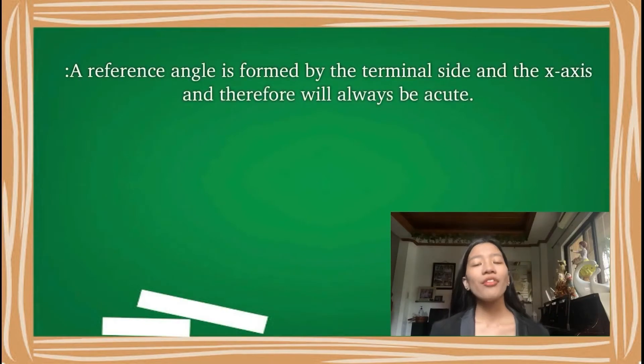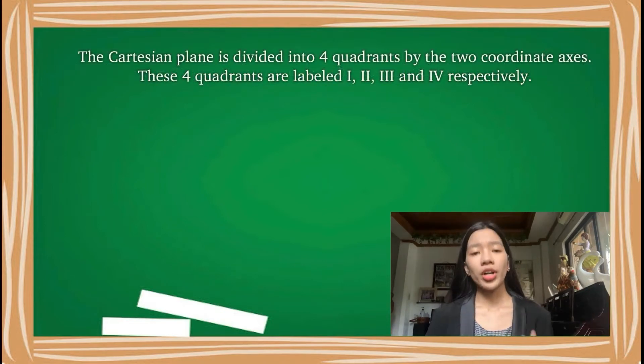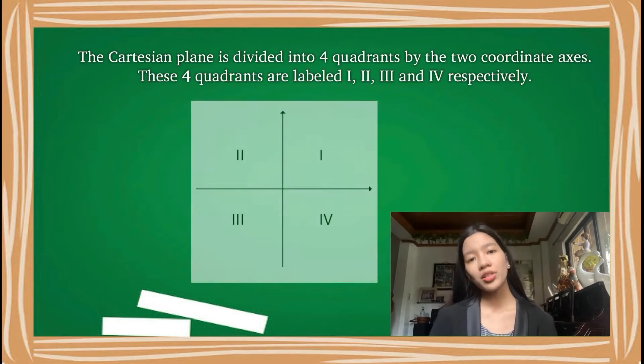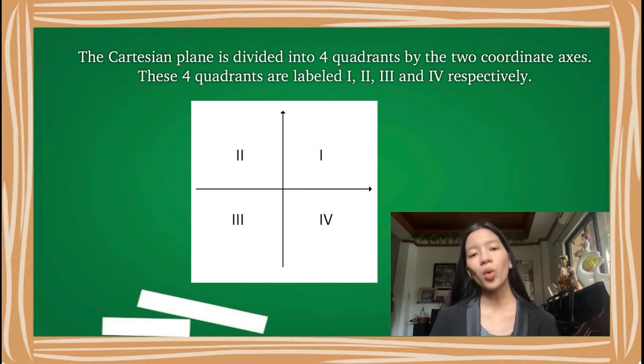So what is a reference angle? A reference angle is formed by the terminal side and x-axis and therefore will always be acute. The Cartesian plane is divided into four quadrants by the two coordinate axes. These four quadrants are labeled as 1, 2, 3, and 4, respectively.